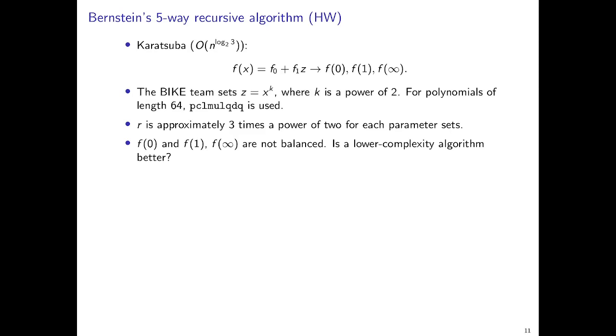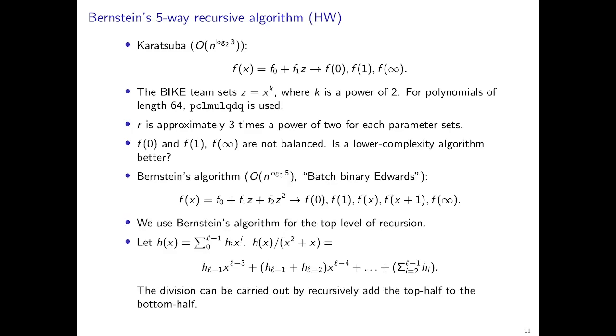And actually, for each of the BIKE's parameter sets, R is always approximately 3 times the power of 2 for each parameter set. So as you can see, the problem here is that f0, f1, and f_infinity are not balanced in terms of length. And we also wonder, maybe a lower complexity algorithm can perform better, because the length of the polynomials are not so short.